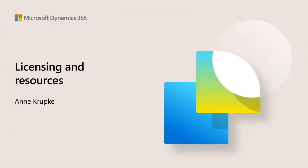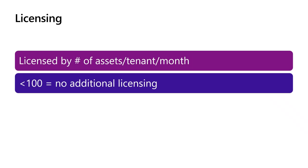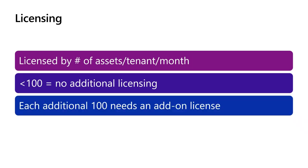Let's talk about licensing, since sometimes under certain conditions you will need additional licenses to use asset management in Dynamics. The licensing is determined based on the number of assets that you have in your tenant in a given month. If you have fewer than 100 assets in your tenant, you don't need any additional licensing — your regular Supply Chain Management licenses are sufficient. If you're over 100 assets, for each 100 assets you need to get an add-on license. It's not the same cost as a full SCM license — it's approximately $50 per month, and you'll need to buy one license for each additional 100 assets in your tenant.